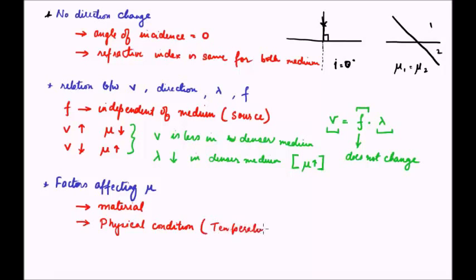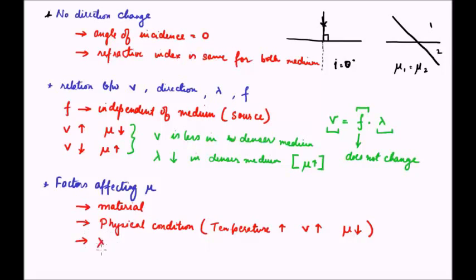The second factor is physical conditions like temperature. When temperature increases, the velocity of the ray of light increases in that medium. Increased velocity is a consequence of increased wavelength, and increased wavelength is a consequence of reduced refractive index. So ultimately, increased temperature means the medium has a lower refractive index than it would at a lower temperature. Temperature is therefore a condition which affects the refractive index.